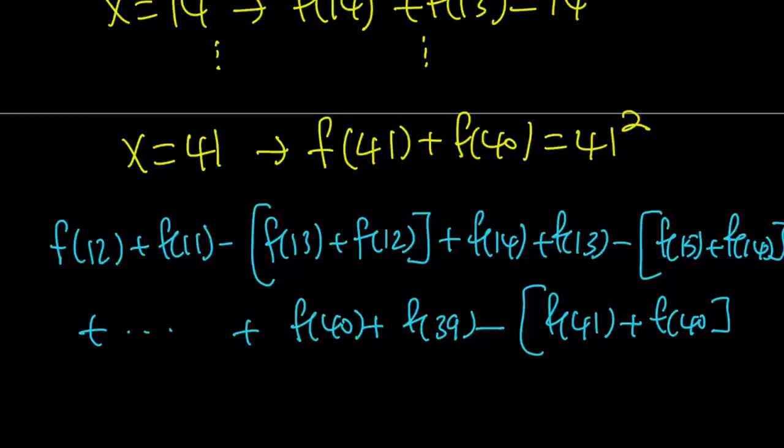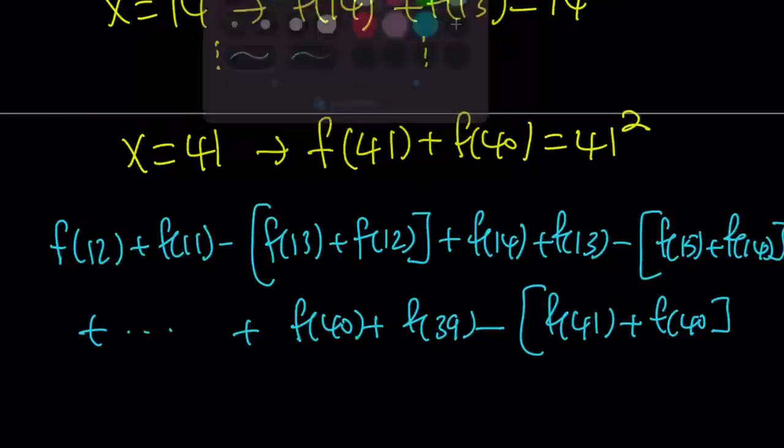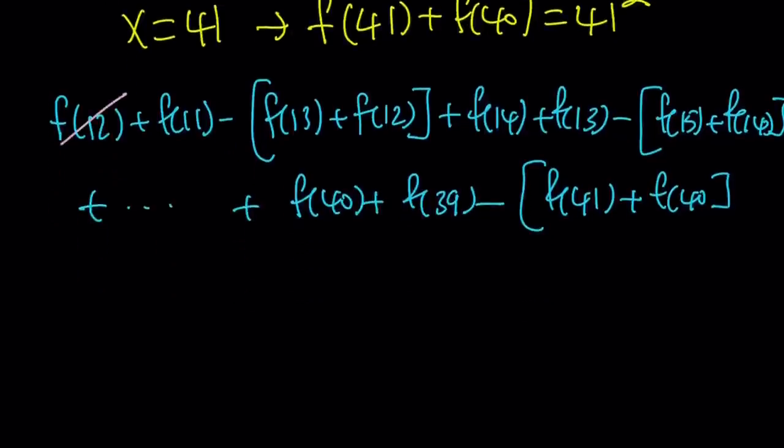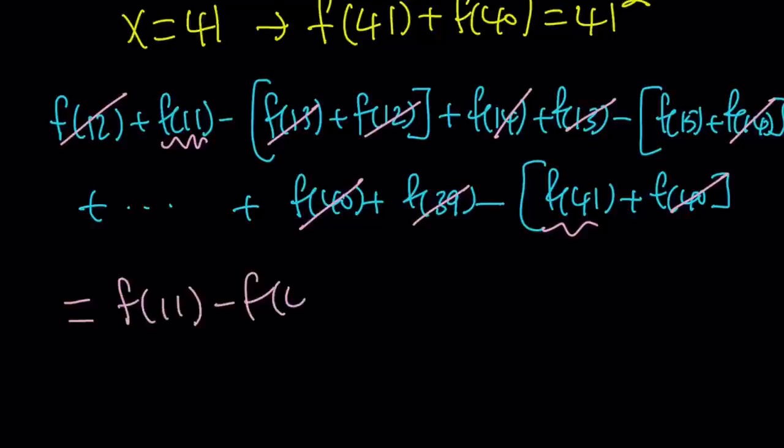Now notice what happens when I find this alternating sum. This is going to give me something that I'm looking for. f(12) is going to cancel out, f(13) is going to cancel out, f(14) is going to cancel out, f(40) is going to cancel out. And of course, f(39) comes before that, so that's also going to cancel out. The only two terms that are left are going to be f(11) and f(41). So this alternating sum is going to equal f(11) - f(41).